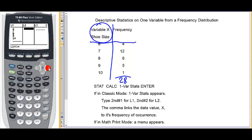And in list 2, we'll put the frequencies. There were 4 students with a shoe size of 6. There were 12 students with a shoe size of 7. And so on.